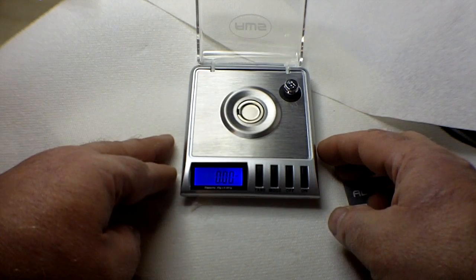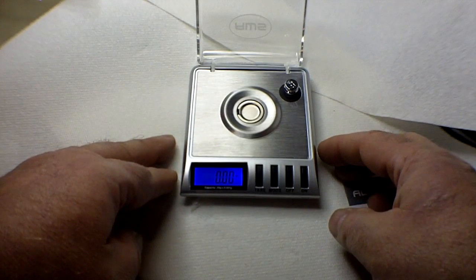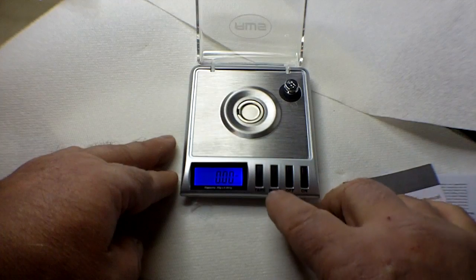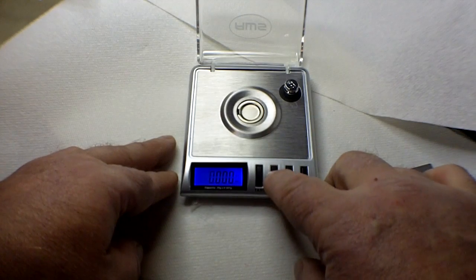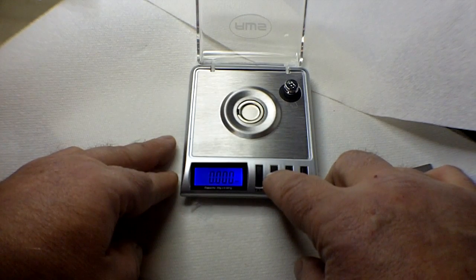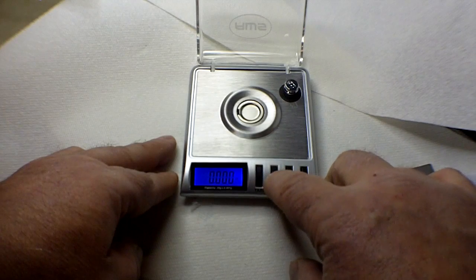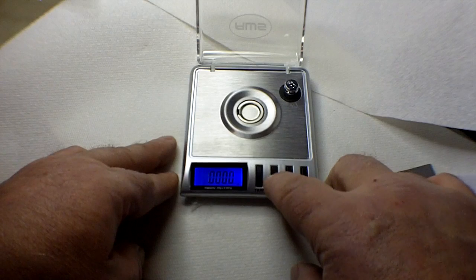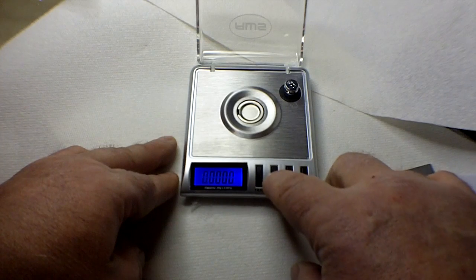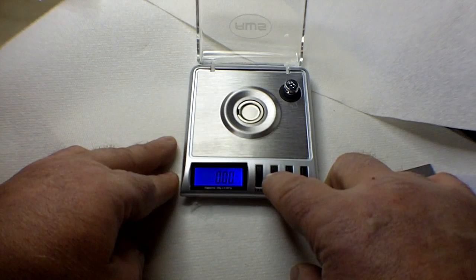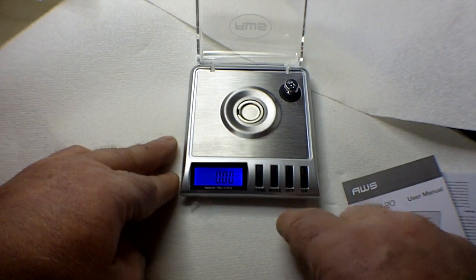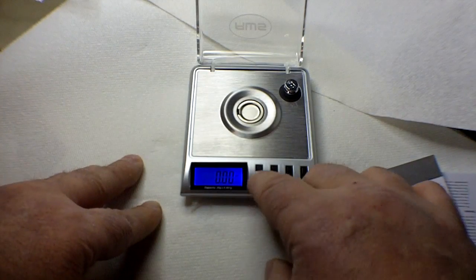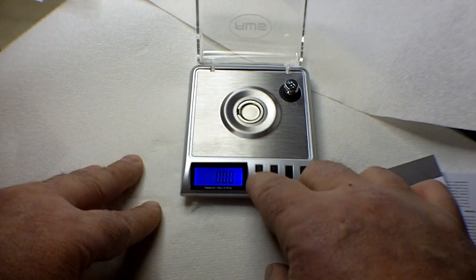Comes up - I had it in grain weight actually. You can switch between the modes: pennyweight, carats, ounces, grams. There's ounces, there's grains right there. So we'll go back to that and tare weight, punch that.